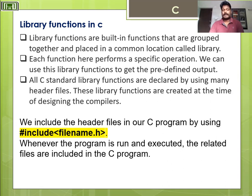Note: we can include header files in your C program using the following syntax — hash symbol followed by include, then the file name dot h in angle brackets. Whenever the program is run and executed, the related files or libraries are included in the C program.